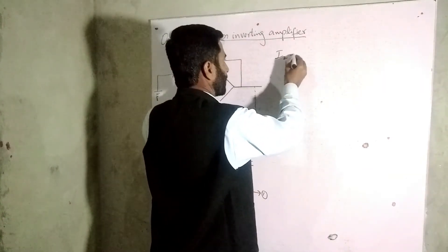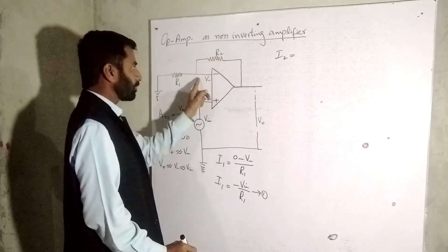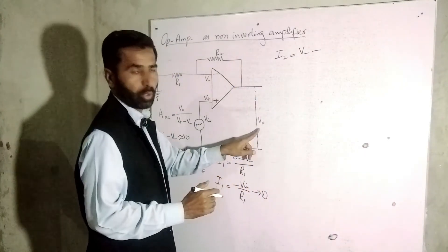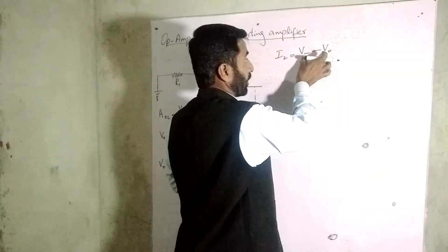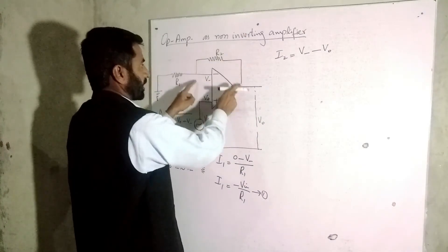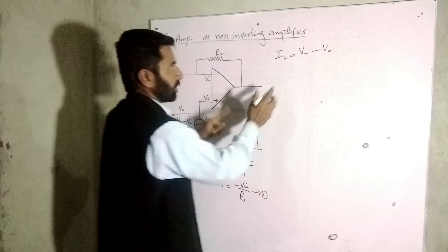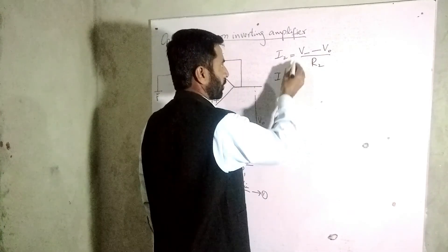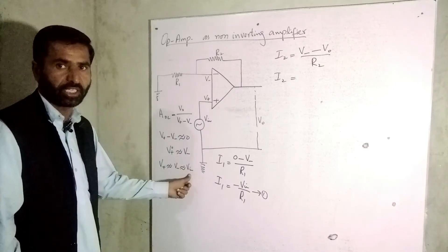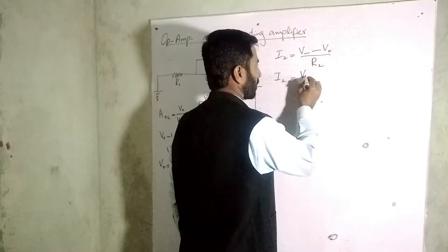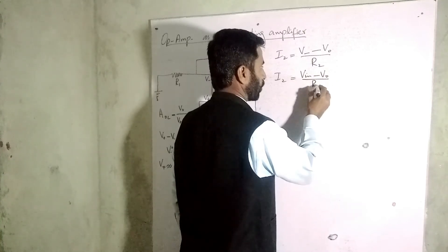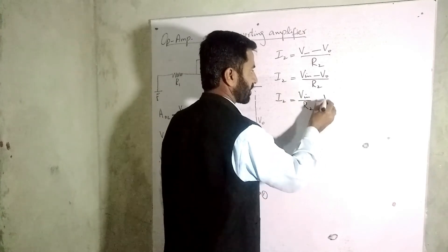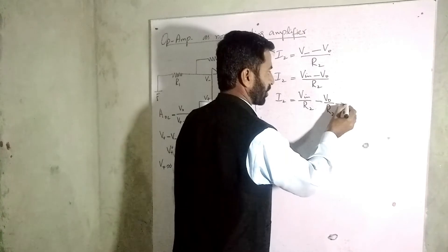For I2, the left side of R2 is at potential V minus, and the right side is at Vout. So I2 = (V minus - Vout) / R2. Since V minus equals Vin, this becomes I2 = (Vin - Vout) / R2, which expands to I2 = Vin/R2 - Vout/R2. This is equation number 2.